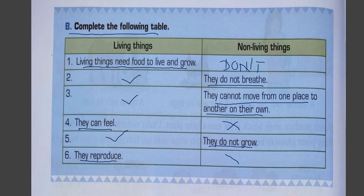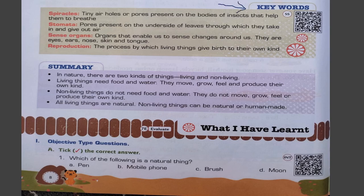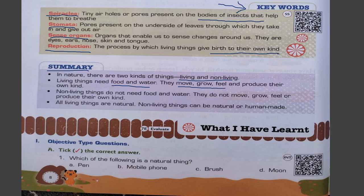Non-living things do not grow whereas living things grow. Living things reproduce; non-living things do not. Key words: spiracles — tiny air holes or pores present on the bodies of insects that help them breathe. Stomata — pores present on the underside of leaves through which plants take in and give out air. Sense organs — organs that enable us to sense changes around us: eyes, ears, nose, skin, and tongue. Reproduction — the process by which living things give birth to their own kind.